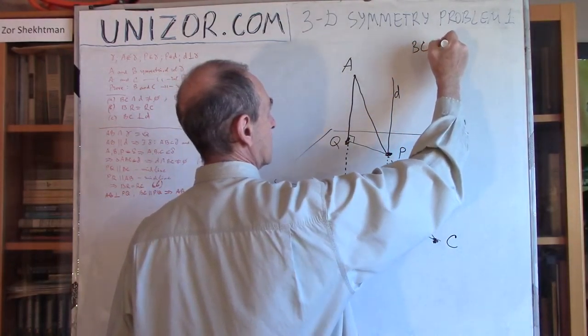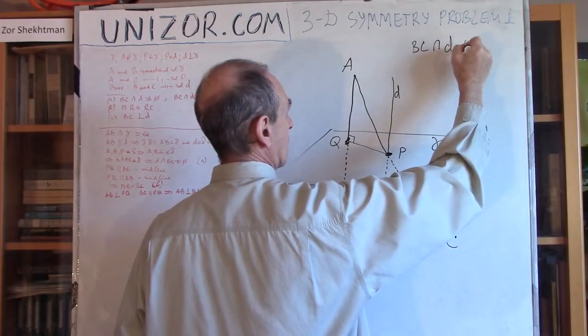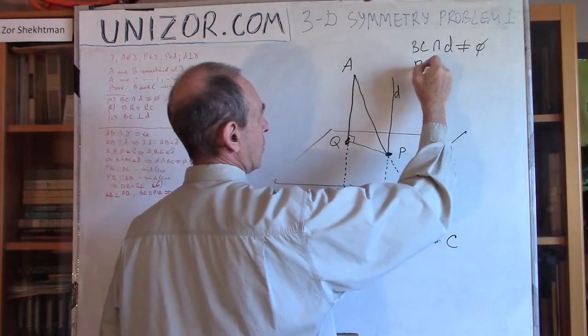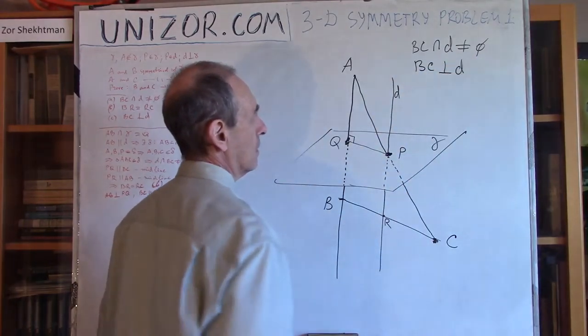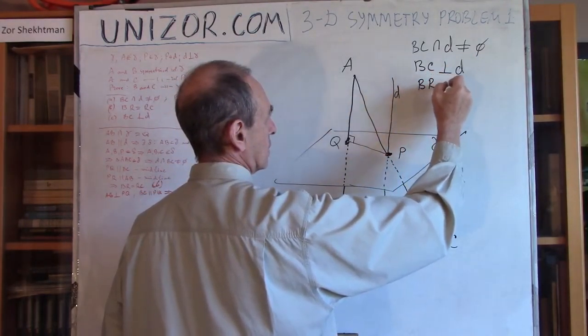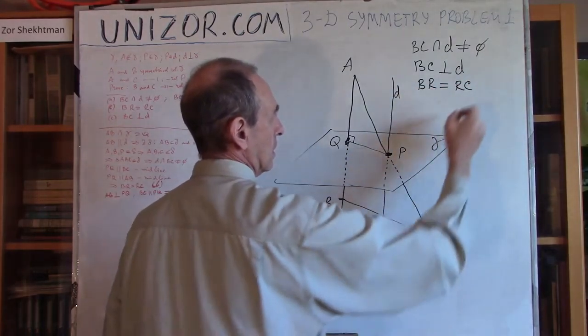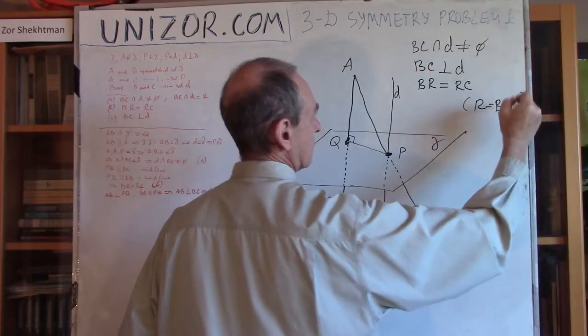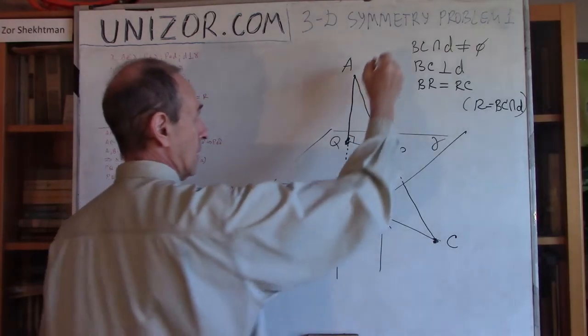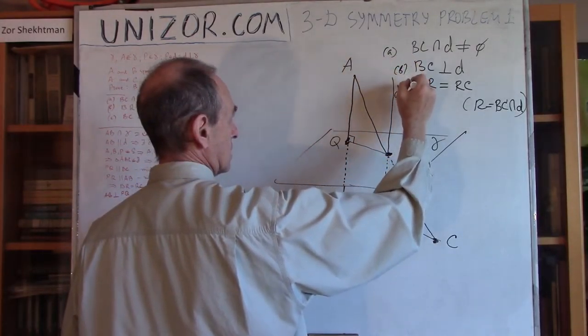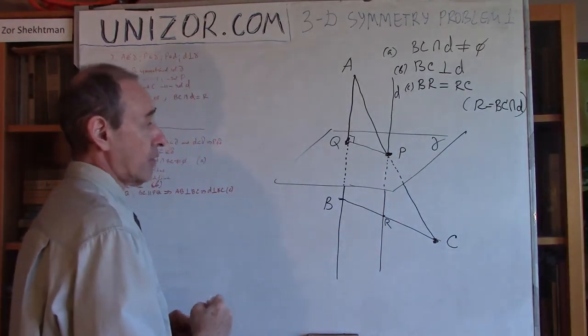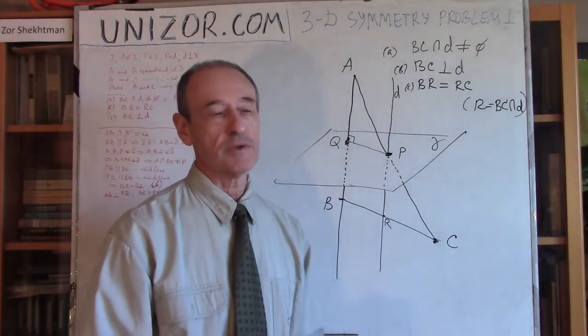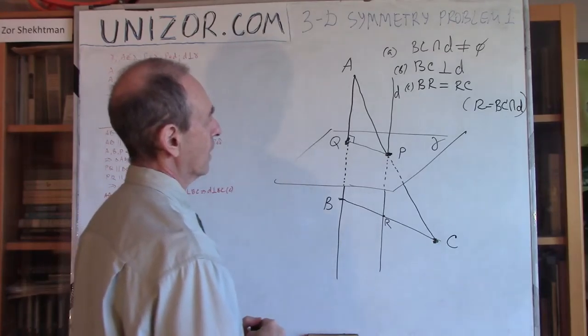Let me write it down. BC is supposed to intersect with D - that's not an empty set. BC is supposed to be perpendicular to D. And BR should be equal to RC, where R is actually the intersection BC intersect D. So that's what we have to prove, these three things: conditions A, B, and C. I was explaining for such a long time the conditions of this problem. The proof is not really very difficult and not very long.